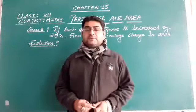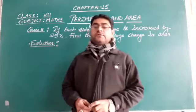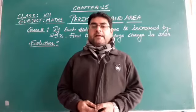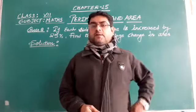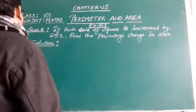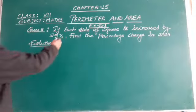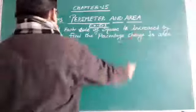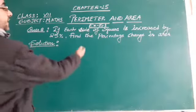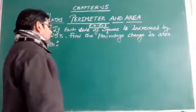Hello everybody, very good morning to all of you, my dear students. Today we will solve question number 8 of exercise 15.1. Question number 8 is: if each side of the square is increased by 0.15%, find the percentage change in area.